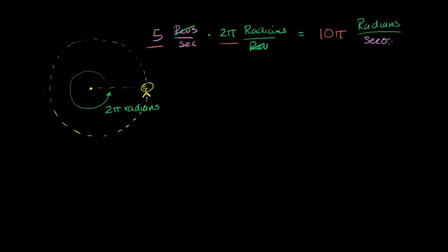Hopefully that also makes sense intuitively. If you're doing five revolutions a second, each of those revolutions is two pi radians, so you're doing 10 pi radians per second — going one, two, three, four, five, getting two pi radians each time, for 10 pi total radians per second. So five revs per second and 10 pi radians per second are both essentially measuring the same thing: how fast you're orbiting around a central point.